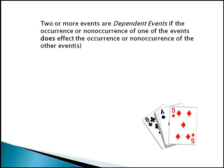Two or more events are dependent events if the occurrence or non-occurrence of one of the events does affect the occurrence or non-occurrence of the other event.